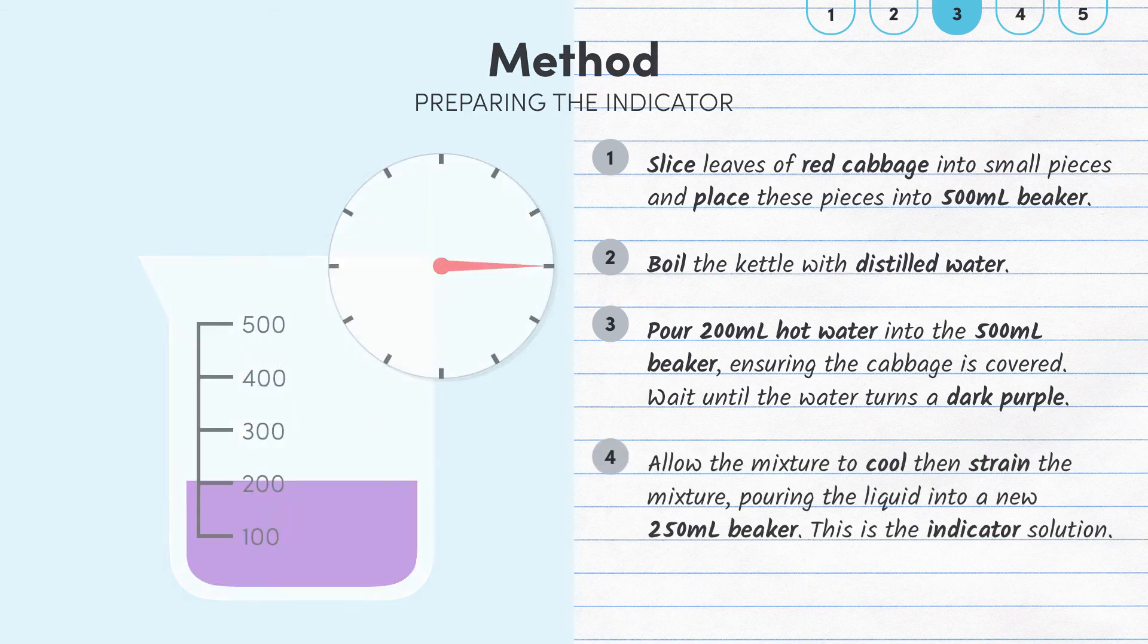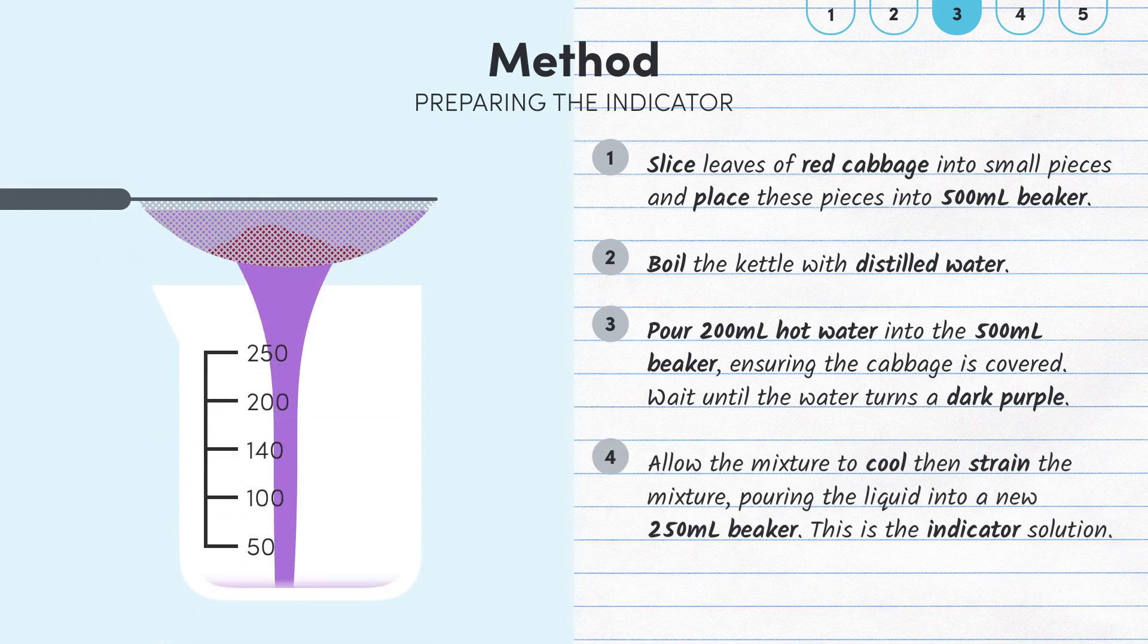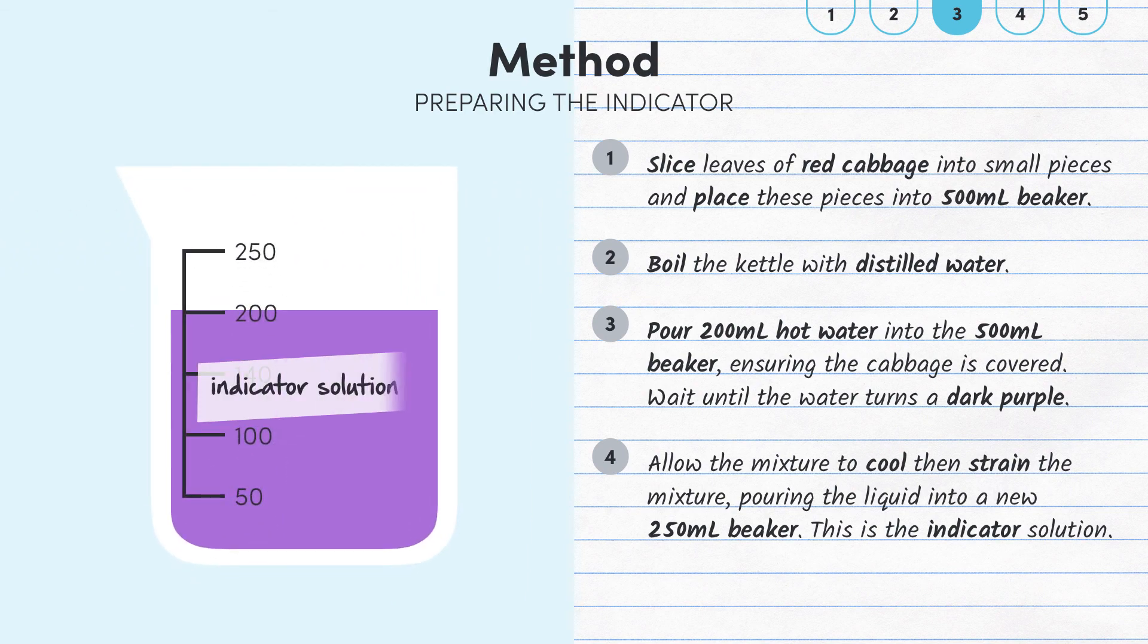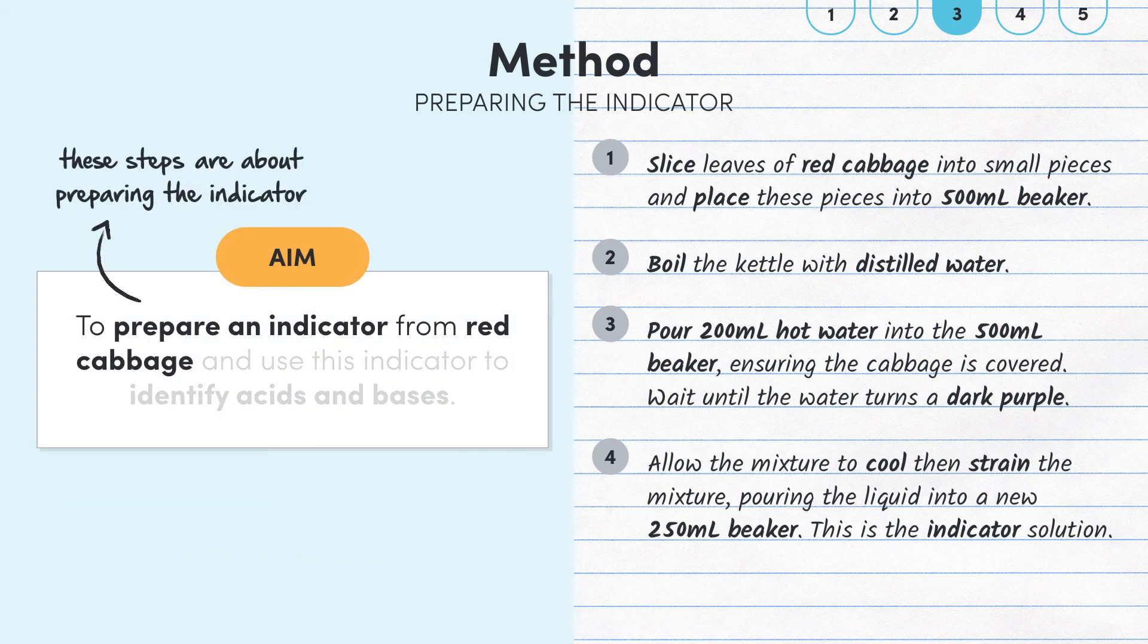Allow the mixture to cool and then strain the mixture, pouring the liquid into a new 250ml beaker. This is the indicator solution. These steps here from 1 to 4 are all about preparing the indicator.